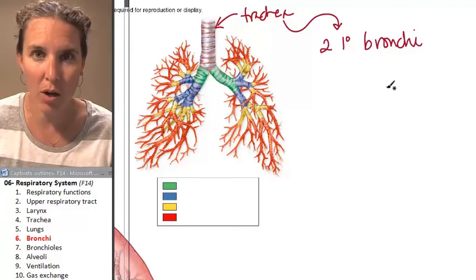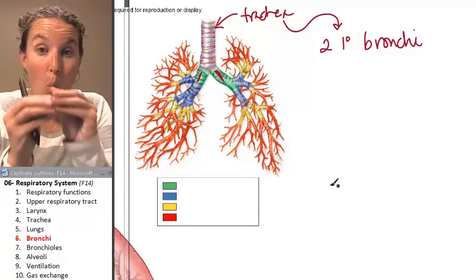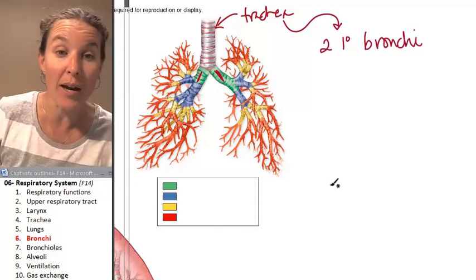Each primary bronchus. Look, here are my primary bronchies. One branches into the left lung, one branches into the right lung. Done.